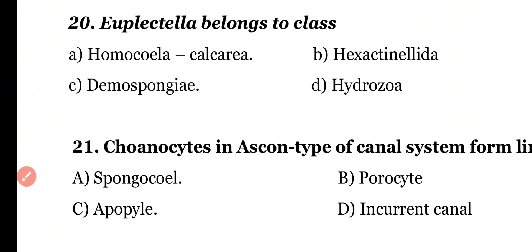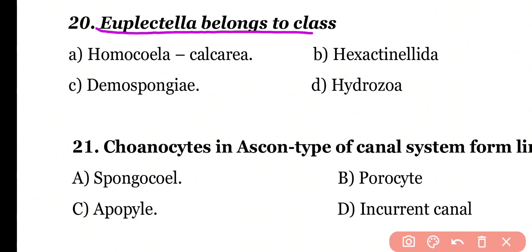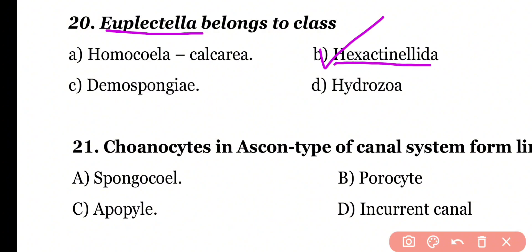Question number 20. Euplectella belongs to the class: homoscleromorpha, calcarea, hexactinellida, demospongiae, or hydrozoa. Correct answer is option B. Euplectella, the Venus flower basket, belongs to the class hexactinellida and phylum porifera.